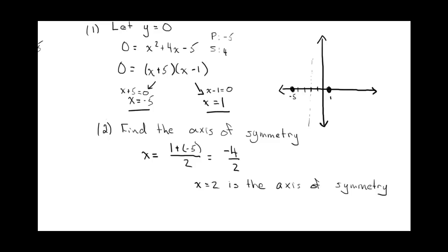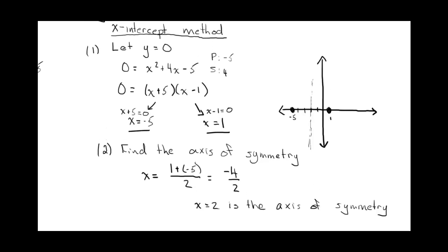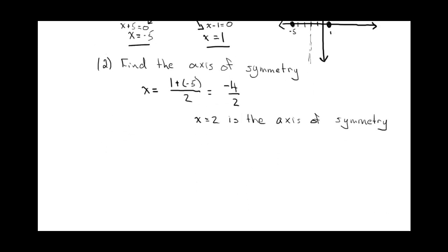So I know my vertex happens at x equals negative two. I just don't know how far down it goes. Now if I want to figure out how far down it goes, all I need to do is find the vertex.